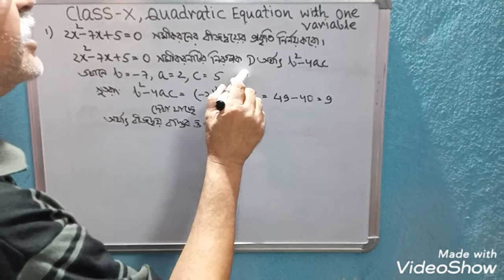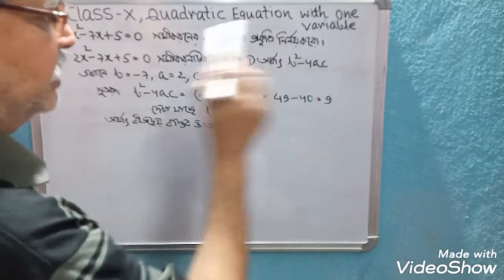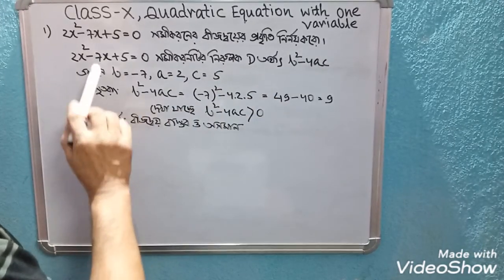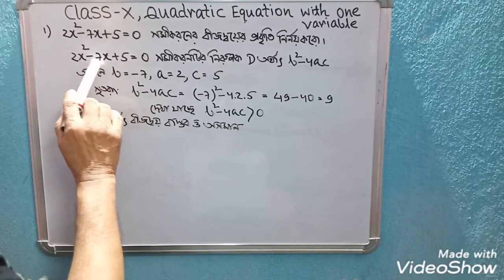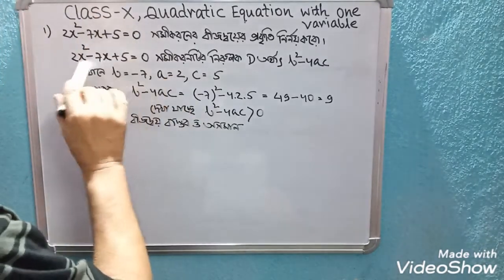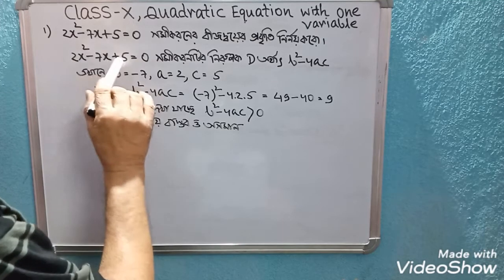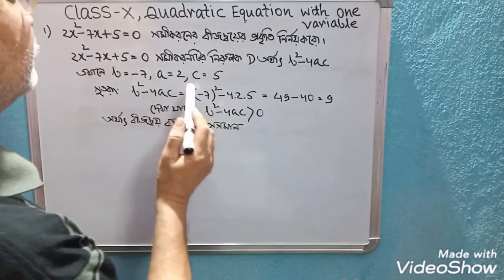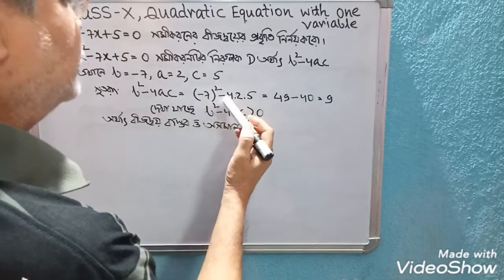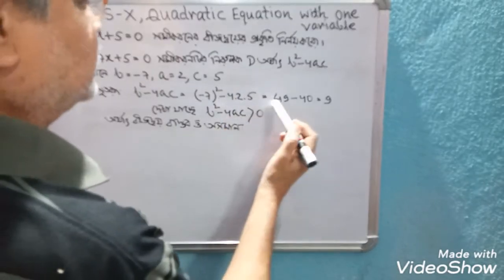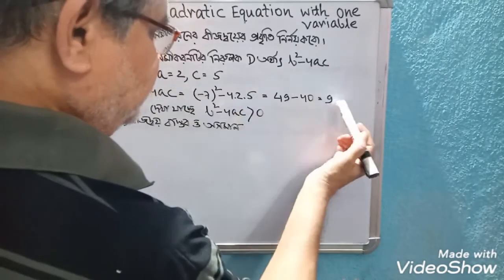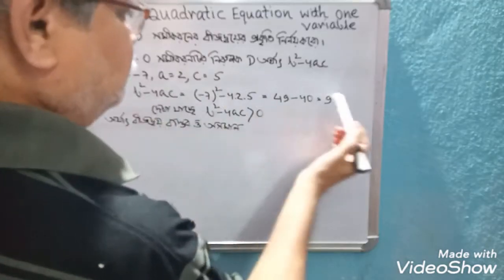We assume that a equals 2, b equals minus 7, and c equals 5. Then D equals b squared minus 4ac, which is minus 7 squared minus 4 times 2 times 5, that is 49 minus 40, giving us 9.